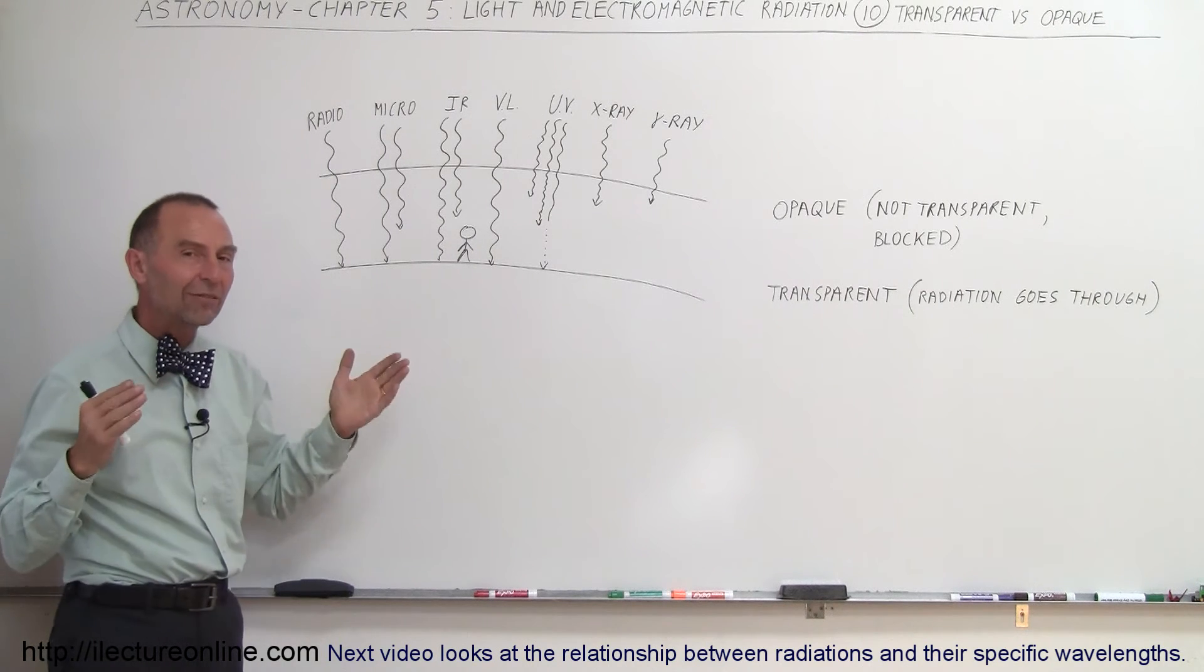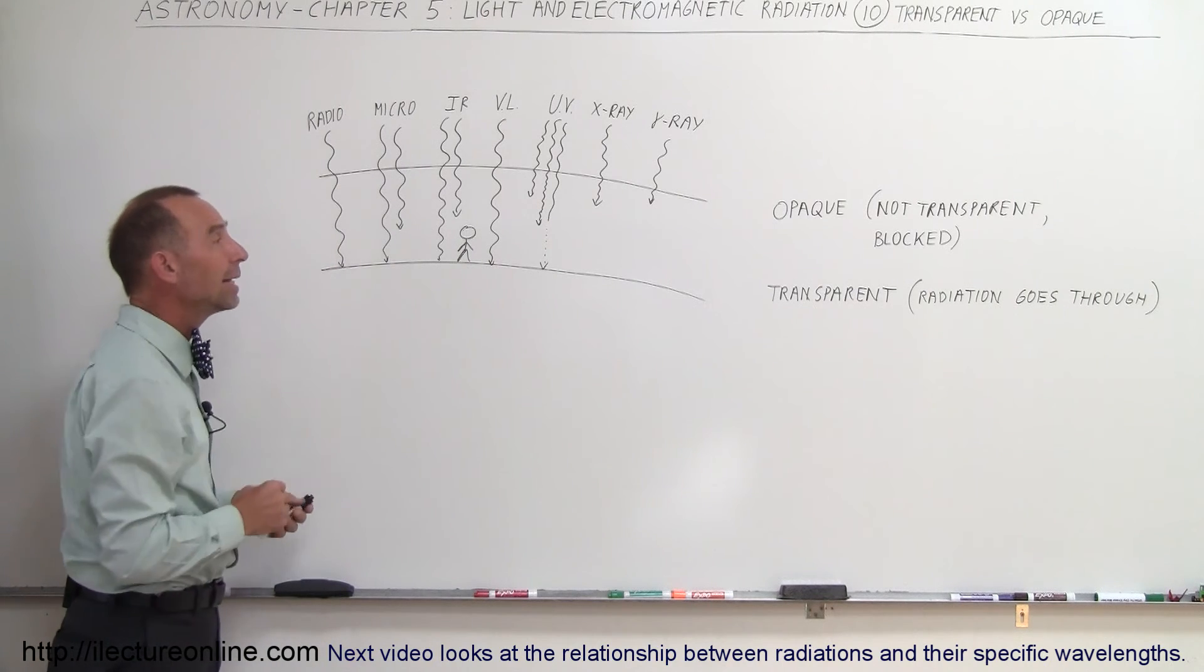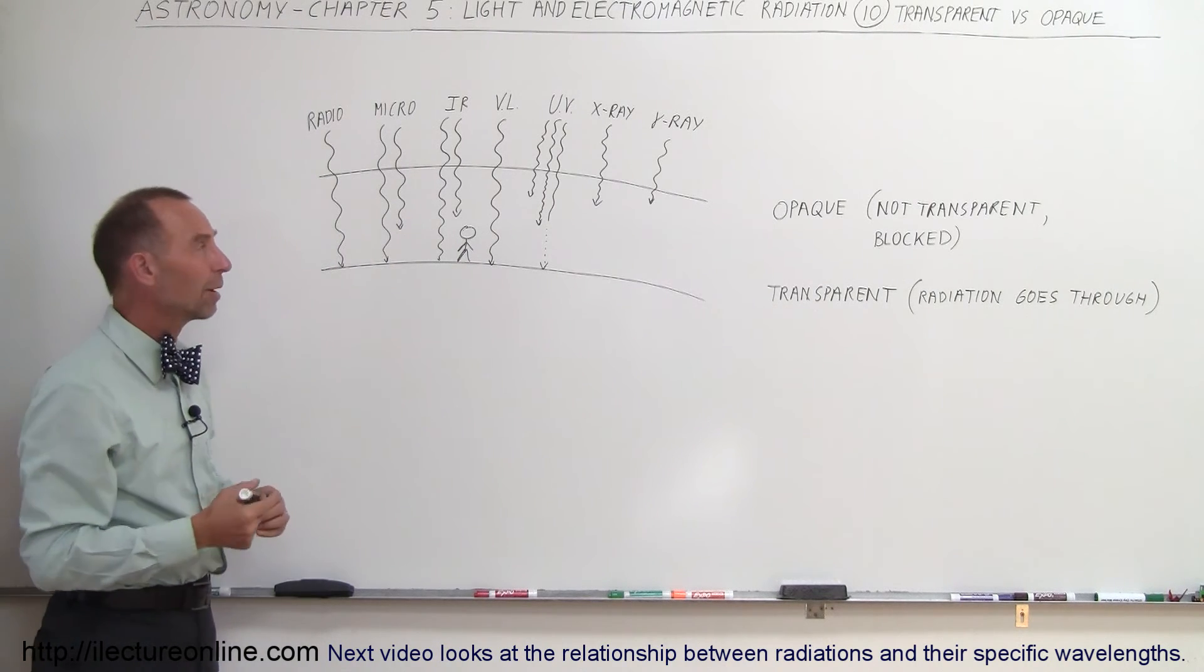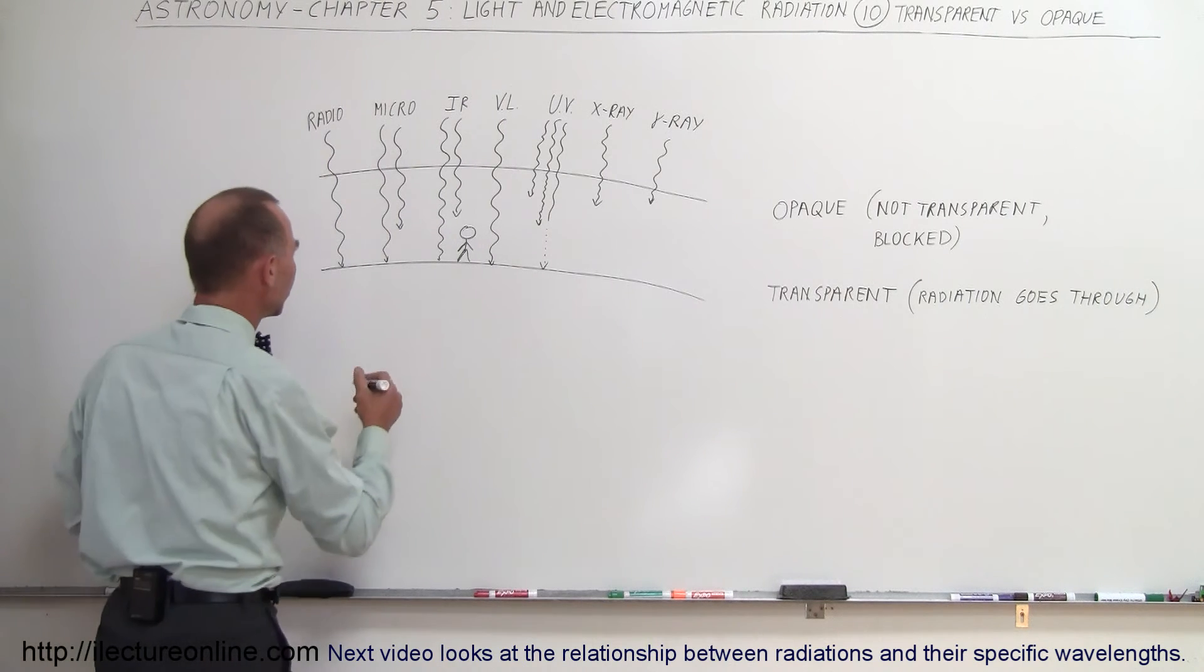And then radio radiation with the long wavelengths, it has no problems making it through the atmosphere. So typically for radio radiation, it's completely transparent.